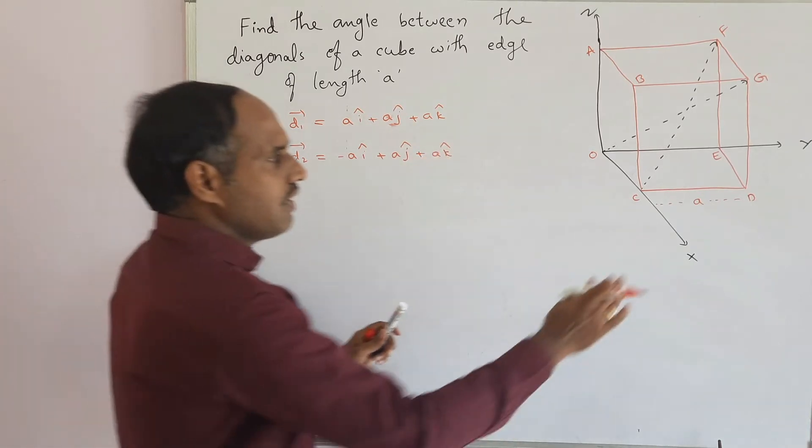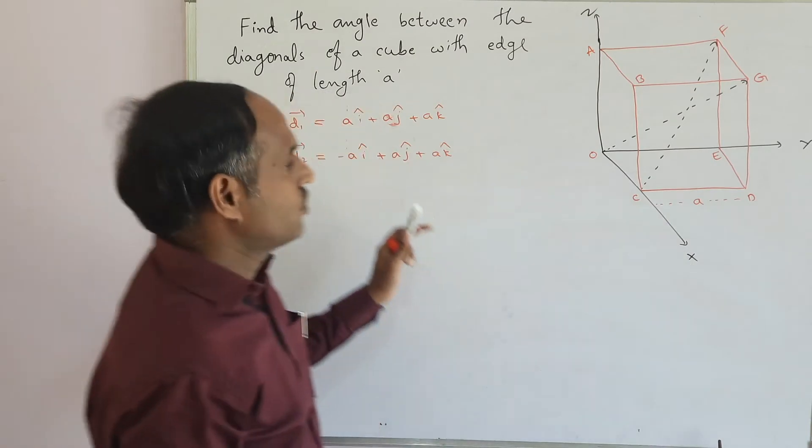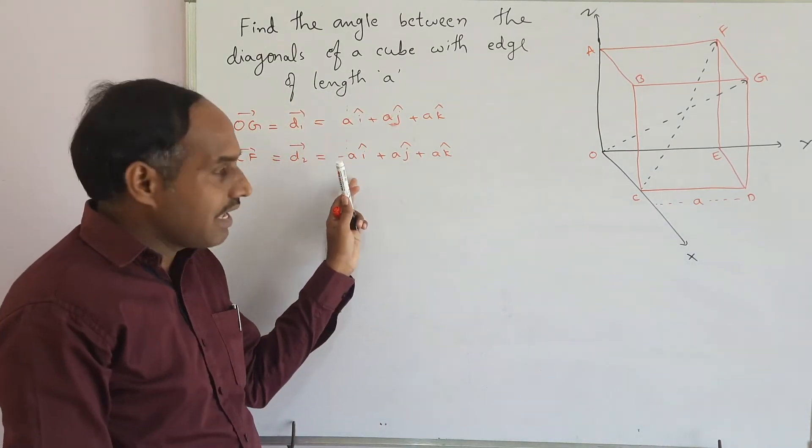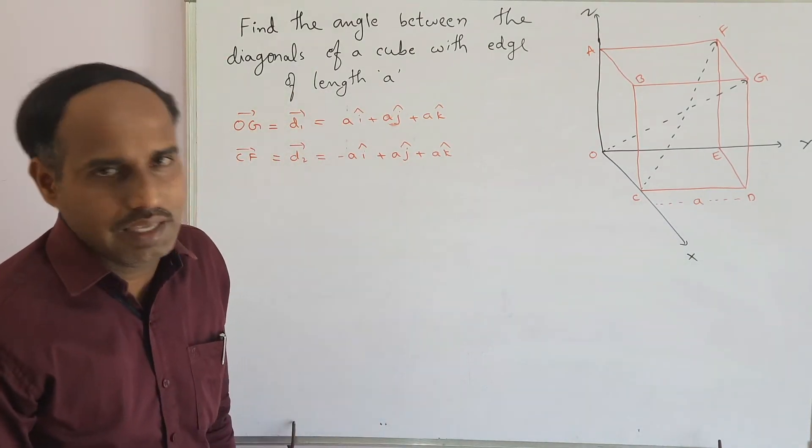The same thing, if you are taking this as X axis, this is Y and here is Z, you can write the second diagonal as A i plus A j minus A k.